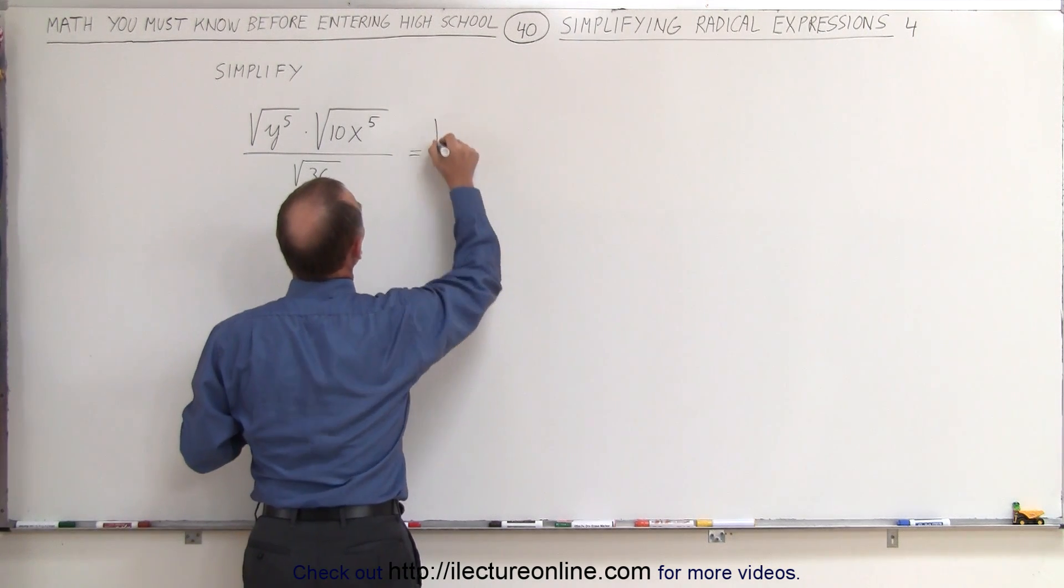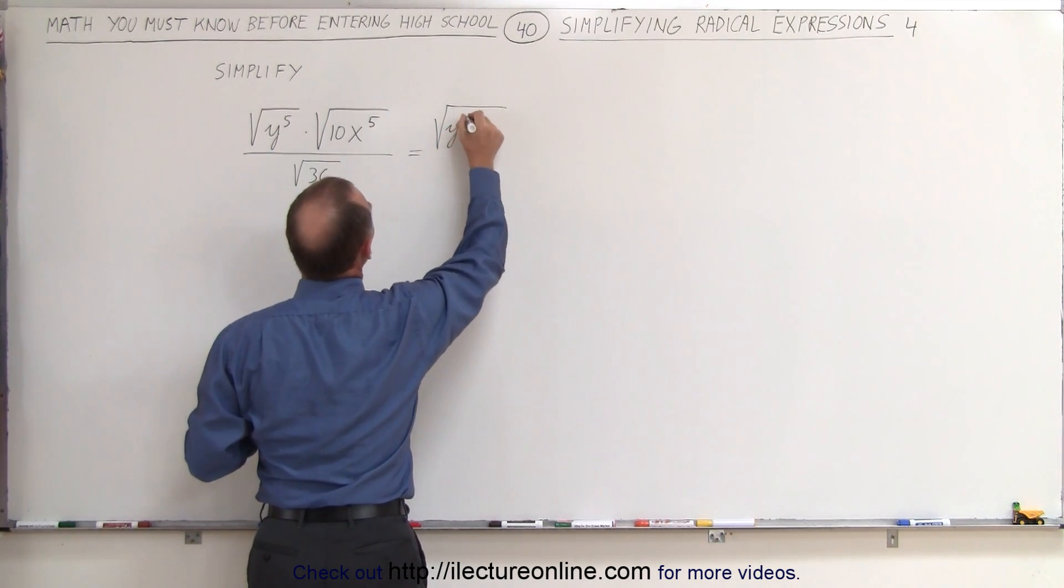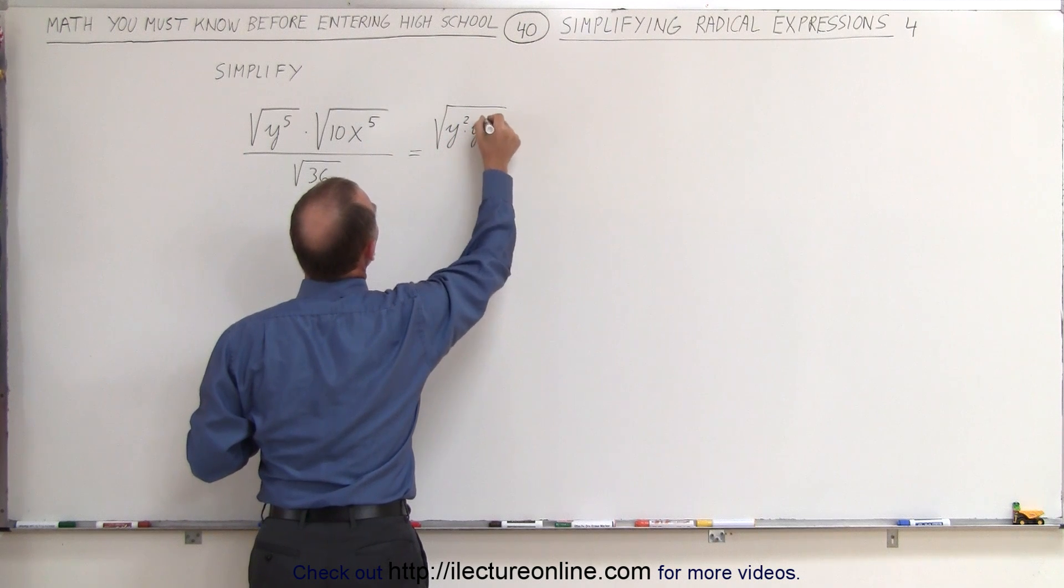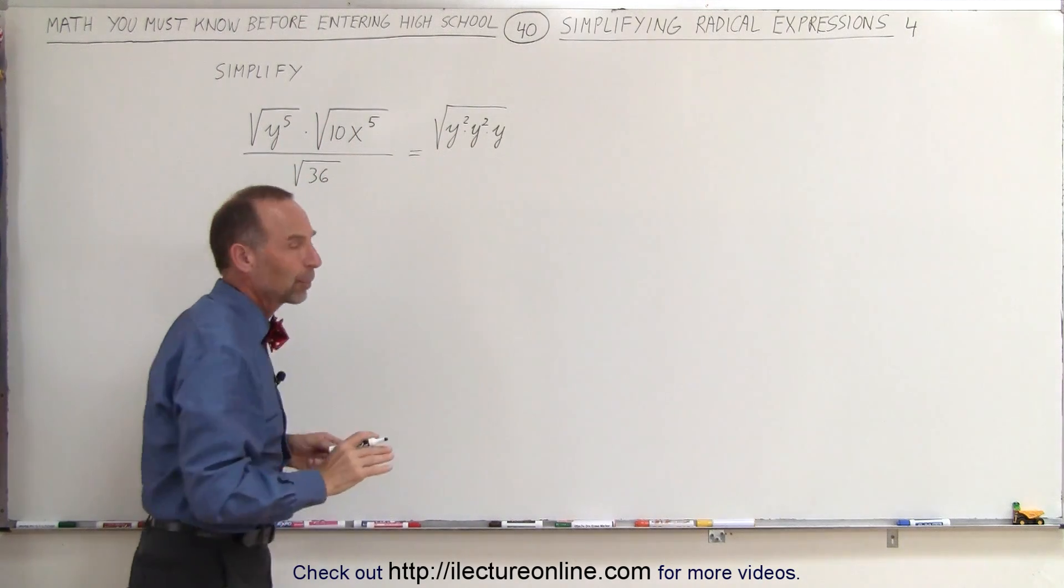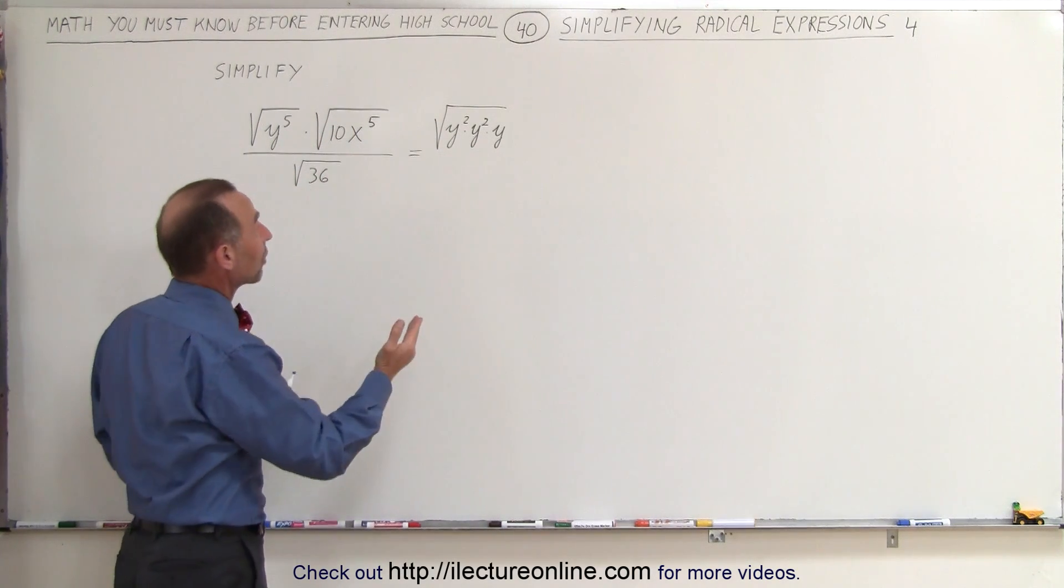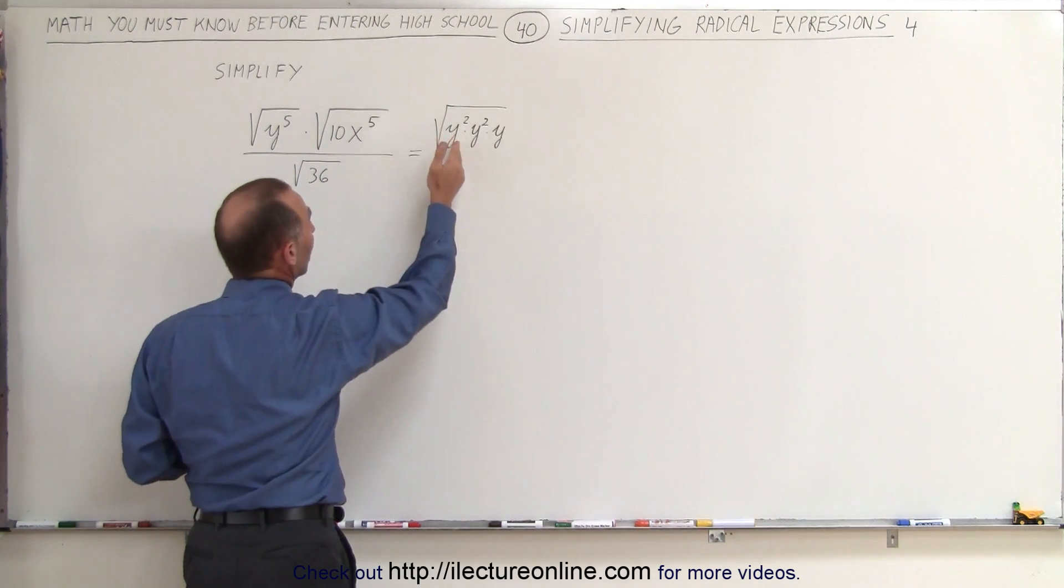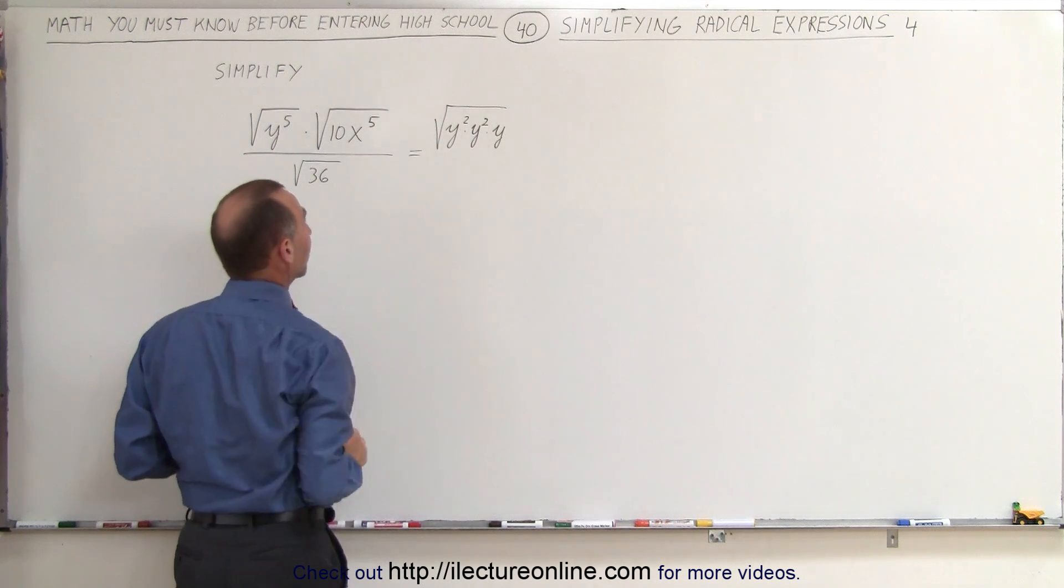It can be written as the square root of y squared times y squared times y. This, when you multiply together, gives you y to the fifth. Why did we do that? Well, to illustrate that the square root of something squared could simply be taken outside the radical sign.